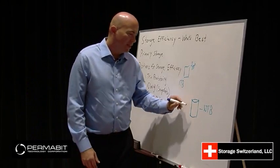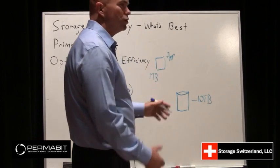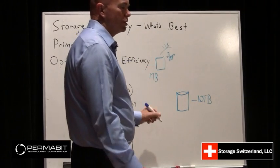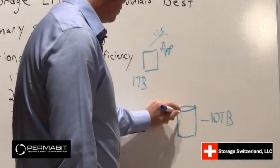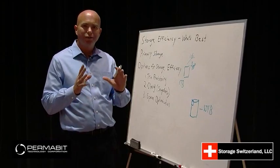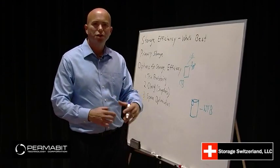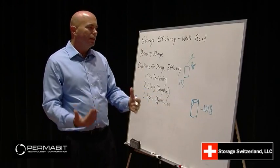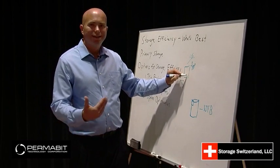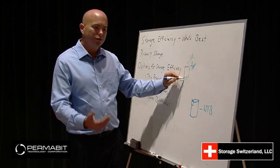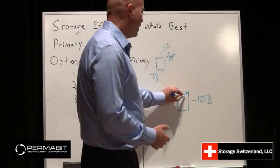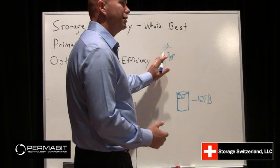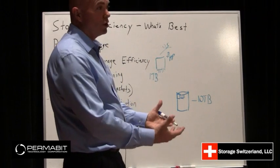What happens is we assign to the application what looks — as far as the app and the OS is concerned — like a terabyte of storage. But what the storage system actually does is only assign a very small amount of storage, just enough to hold whatever that server is going to use on day one. Then as new data is added to that server and it continues to get used, dynamically on the fly the storage system starts adding more storage to the application. That's thin provisioning.